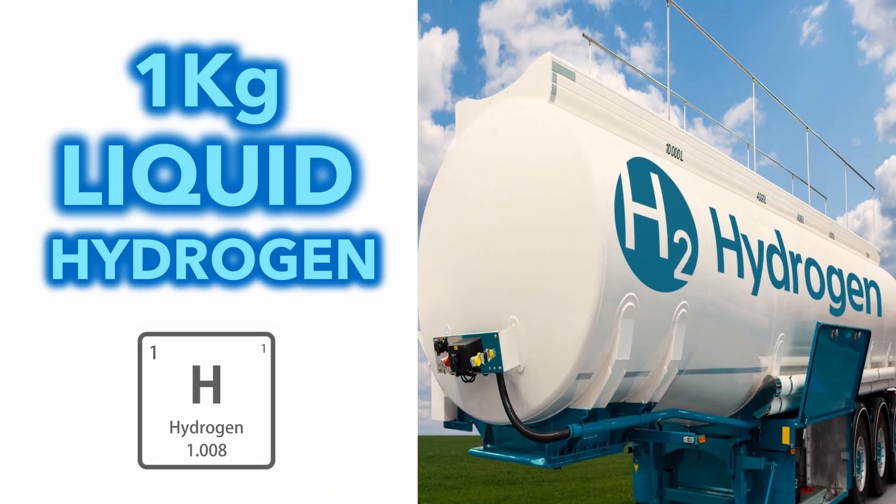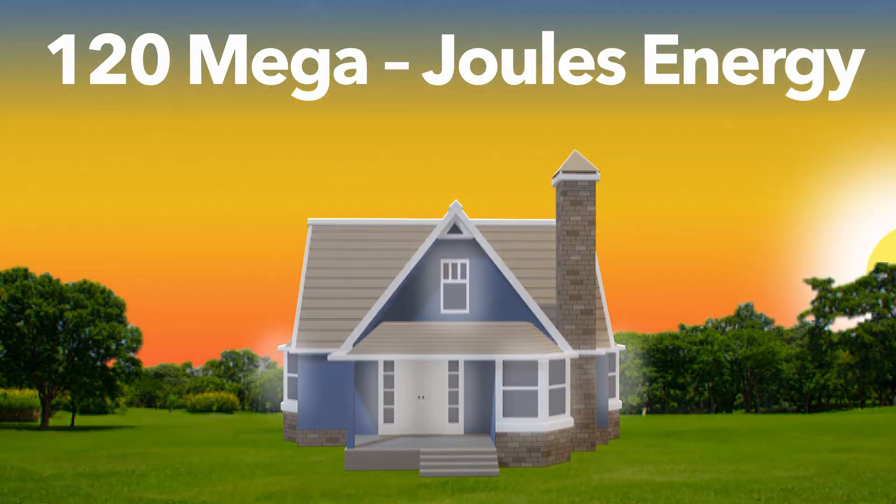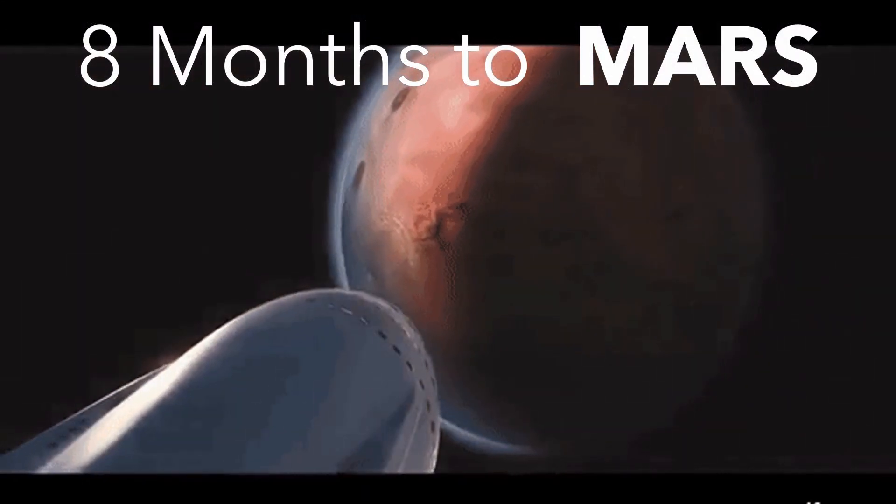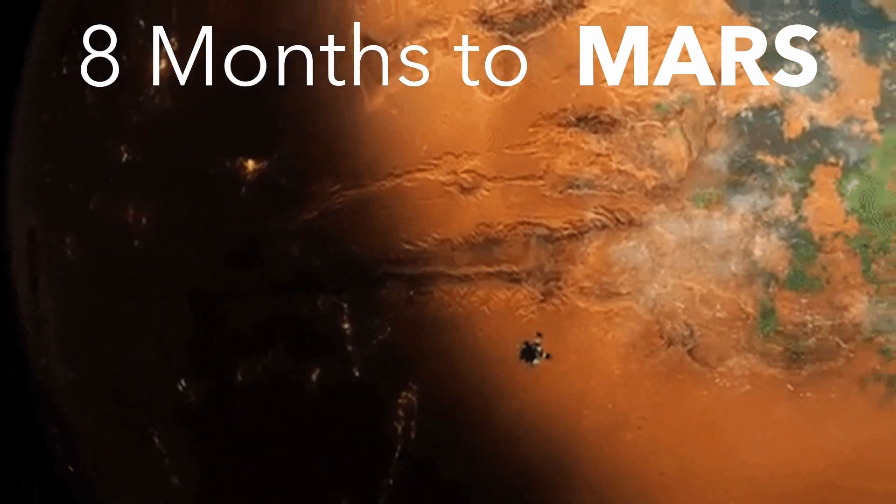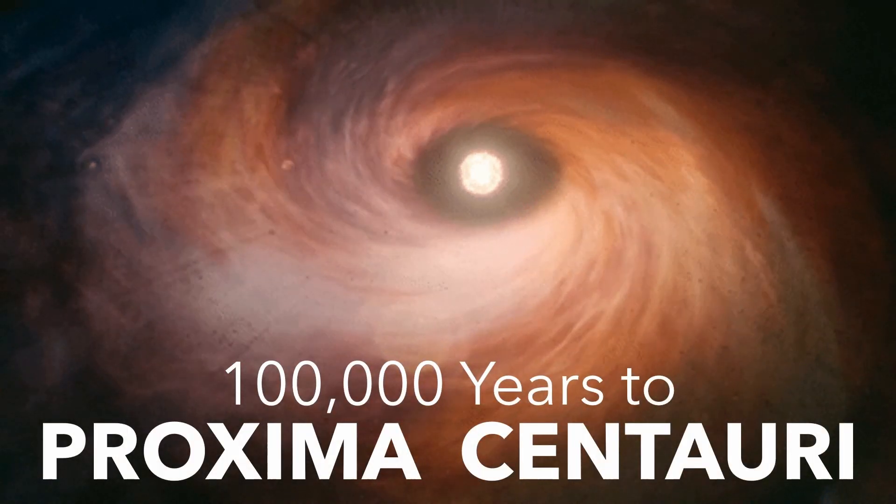For example, one kilogram of liquid hydrogen could power a home for three days. And this might seem a lot, but even the most powerful chemical rockets struggle to reach the nearest planet, and it would take 100,000 years to reach the nearest star to our Sun.